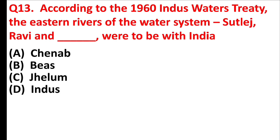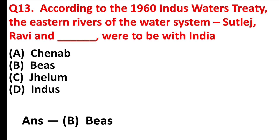According to the 1960 Indus Water Treaty, the eastern rivers of the water system — Sutlej, Ravi, and blank — were to be allocated to India. Answer is option B: Beas.